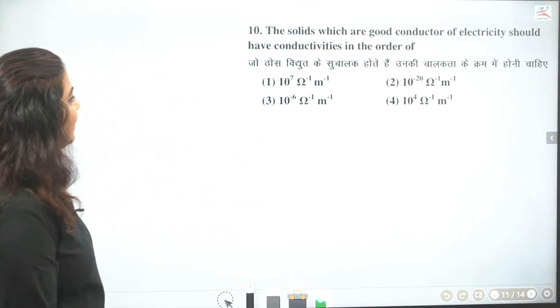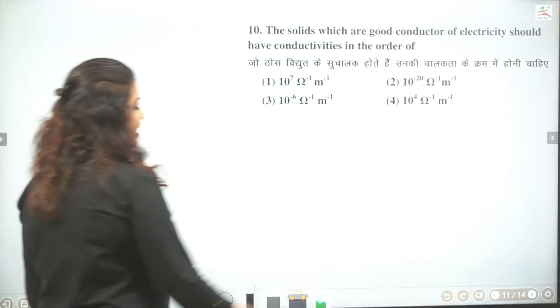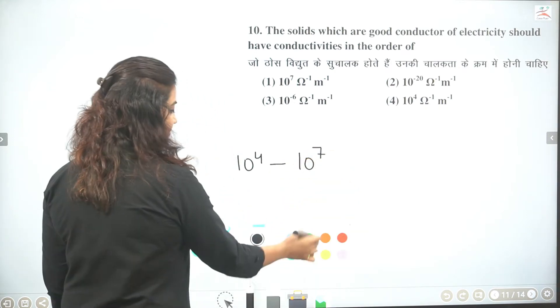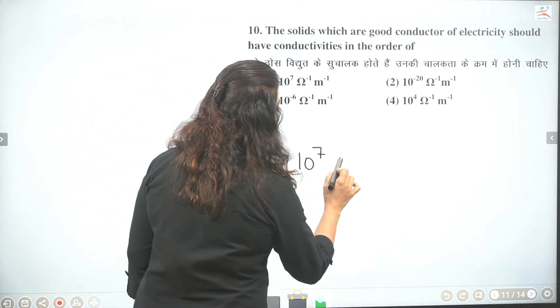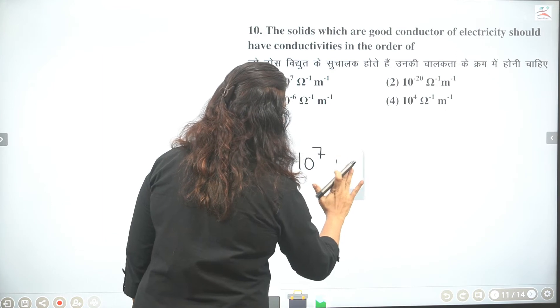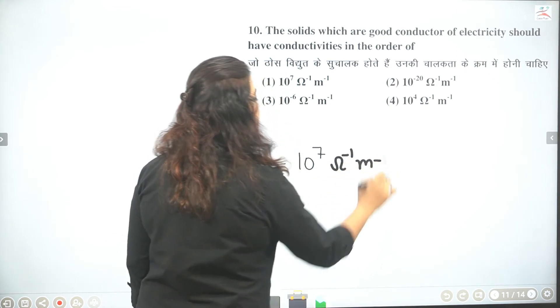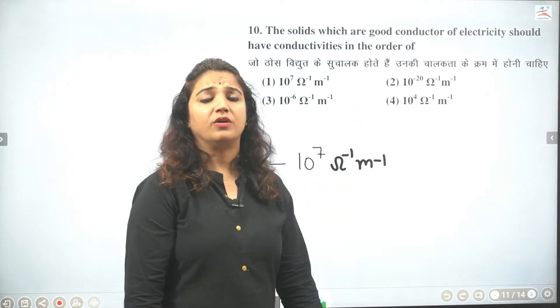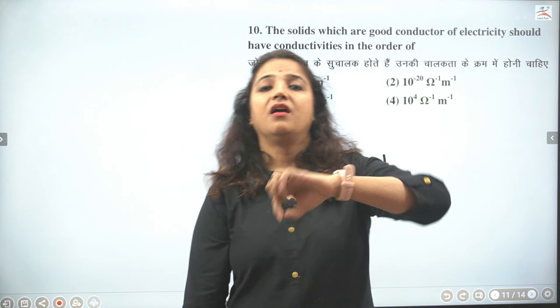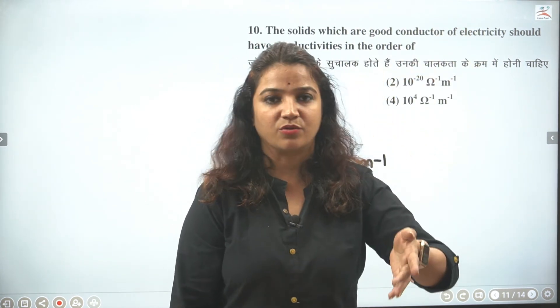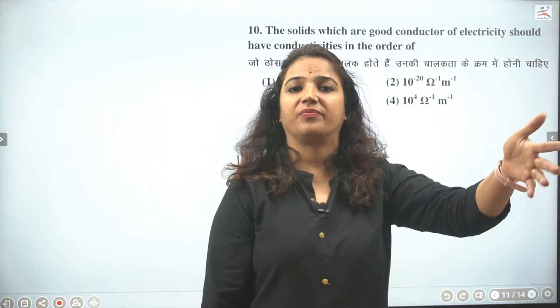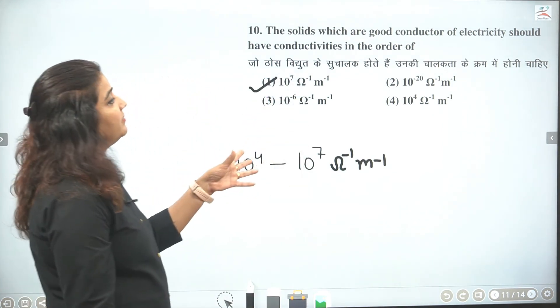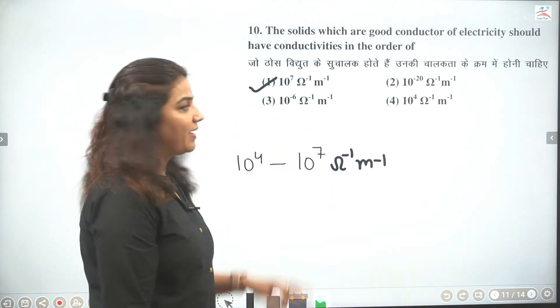Now the solids which are good conductor of electricity should have conductivity in the order of. Ab acche conductors ka conductivity range hota hai that is from 10 to the power 4 to 10 to the power 7. Thik hai. Conductors ki conductivity range jo hai wo yeh hota hai. Ohm inverse ya hum likh sakte hai isko ohm inverse meter inverse. Thik hai. Ab aapke paas kya hai, 10 to the power 7 aa gaya. Minus minus ka toh chalega nahi. Aur 10 to the power 4, dono answer hai. Toh conductivity range 10 to the power 4 se shuru hota hai aur maximum 10 to the power 7 hota hai. Toh agar aapse punge conductor ki baat karo toh 10 to the power 4 se shuru hota hai.